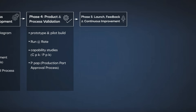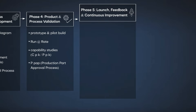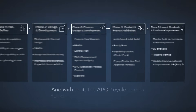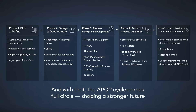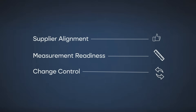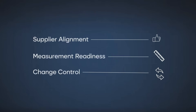The work doesn't stop at launch. Phase five ensures we learn and improve from real-world performance. In this phase, monitoring field performance, warranty returns and in-plant quality data takes place. We perform 8D analyses for any issues found after launch, feed lessons learned back into design standards and process templates, and update training materials to improve the next APQP cycle. Phase five closes the loop — it's where experience transforms into organisational knowledge. Throughout all phases, supplier alignment, measurement readiness and change control must be tightly managed. This is what ensures a smooth, predictable launch.